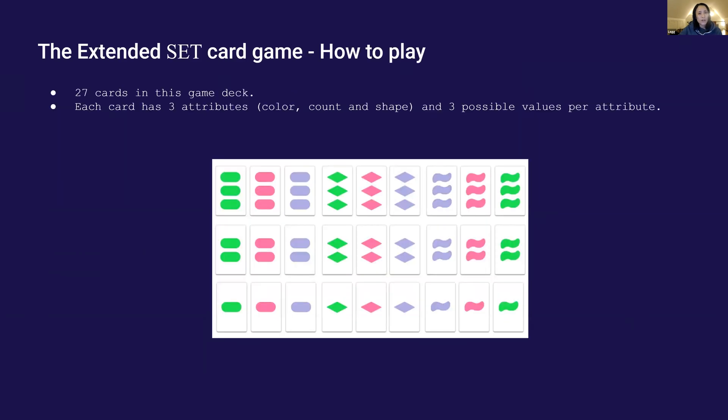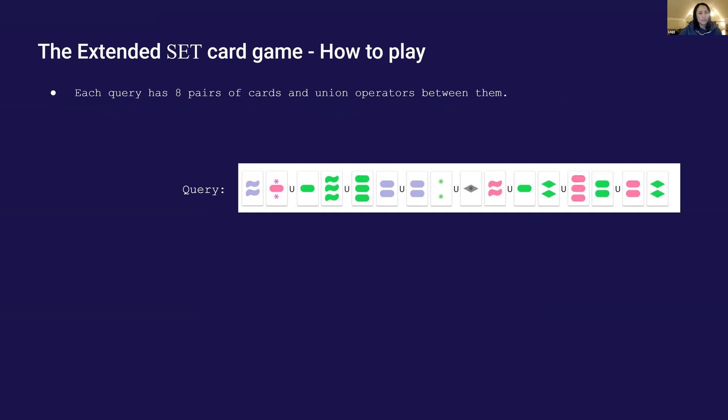I'm going to show an example game and how the models would play it. Here's a deck of 27 cards, each with three attributes and three possible values per attribute.